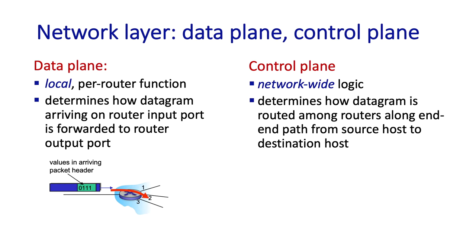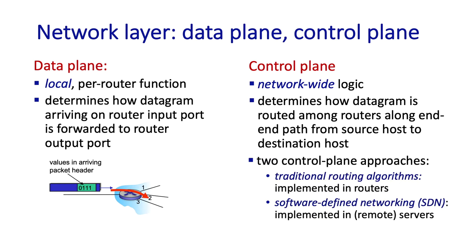We'll study two different approaches towards implementing the control plane. The first is what we might call the traditional approach, which uses distributed routing algorithms to determine paths. The second, newer approach is what's called software-defined networking. We'll learn about these approaches in detail a bit later, but here are a few illustrations to help you get a general feel for the two different frameworks.